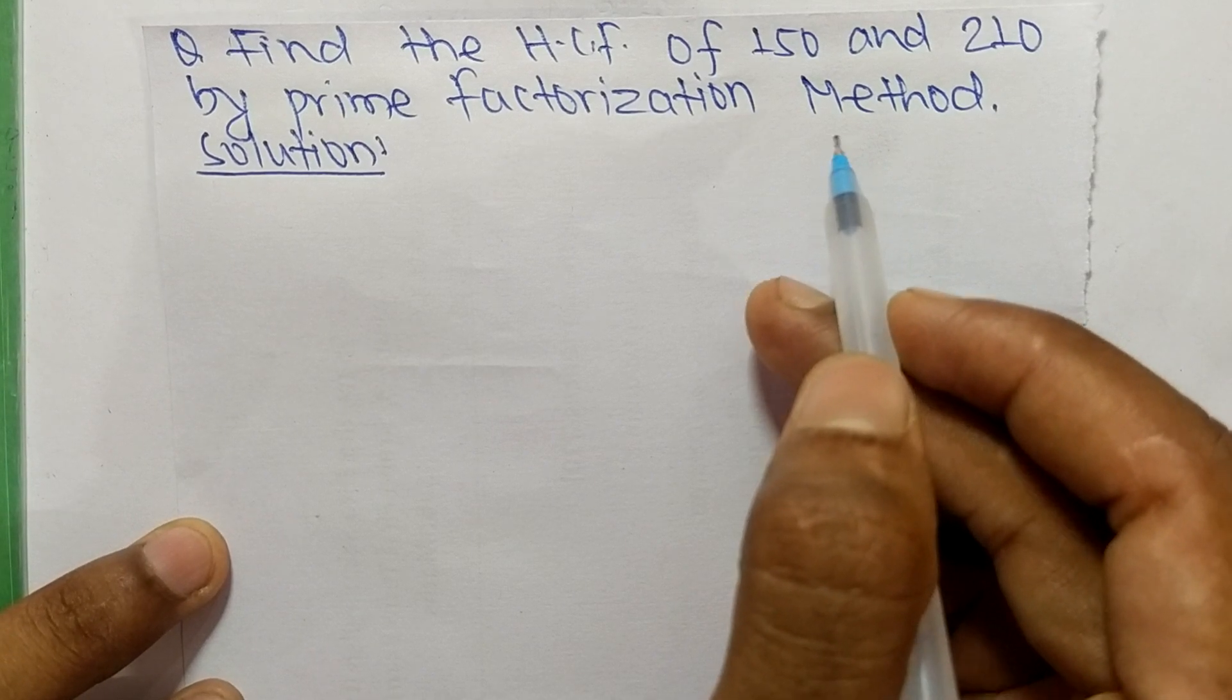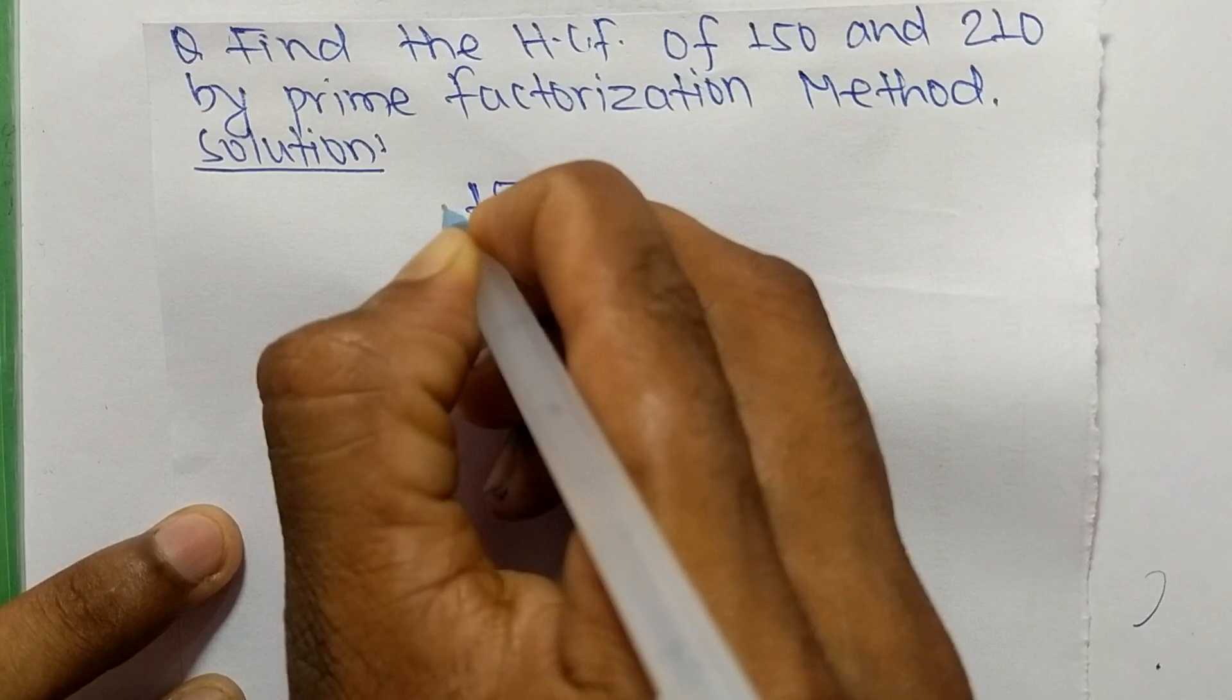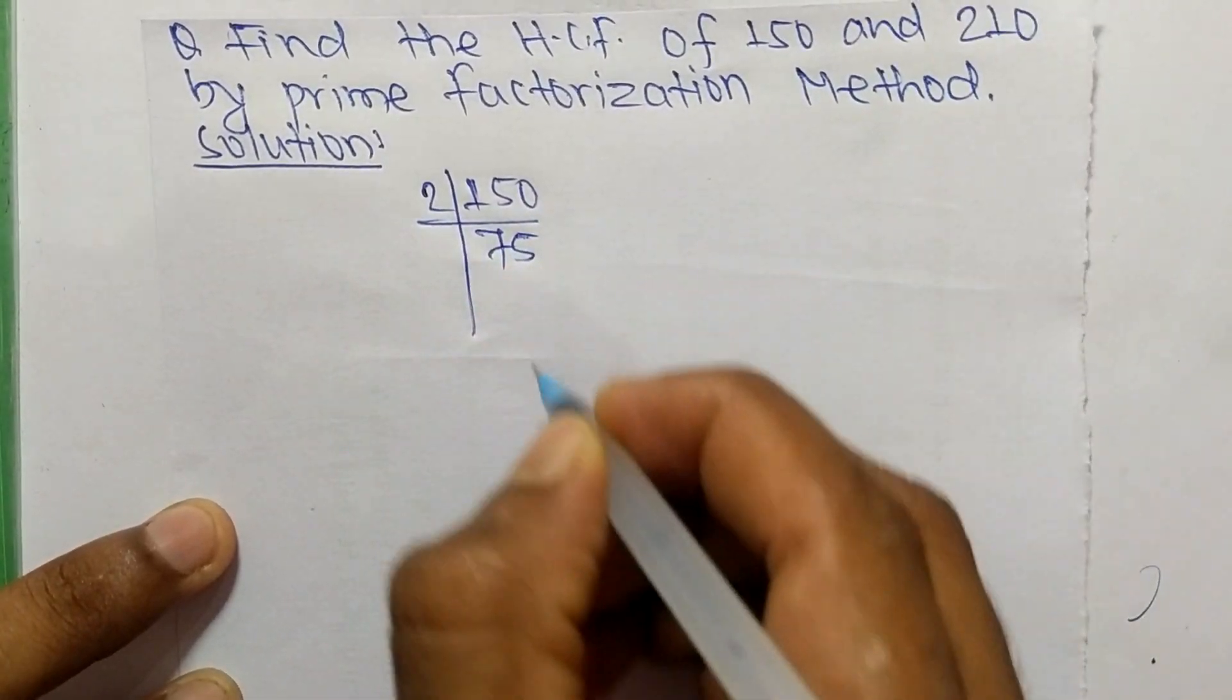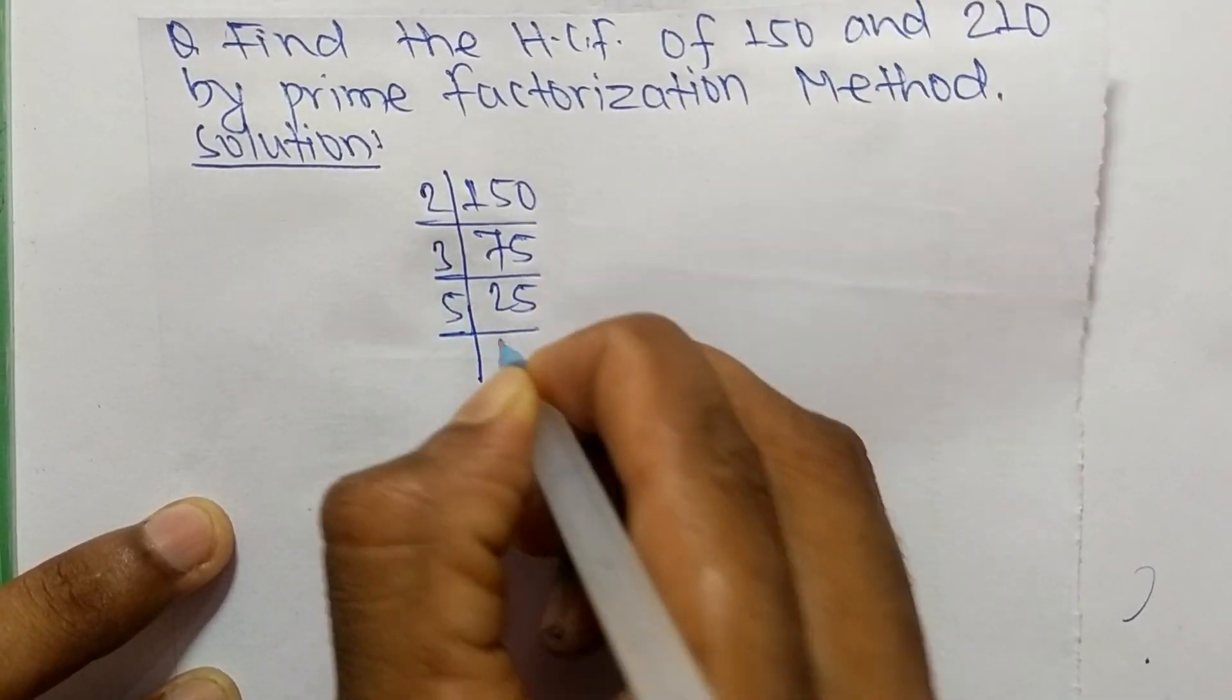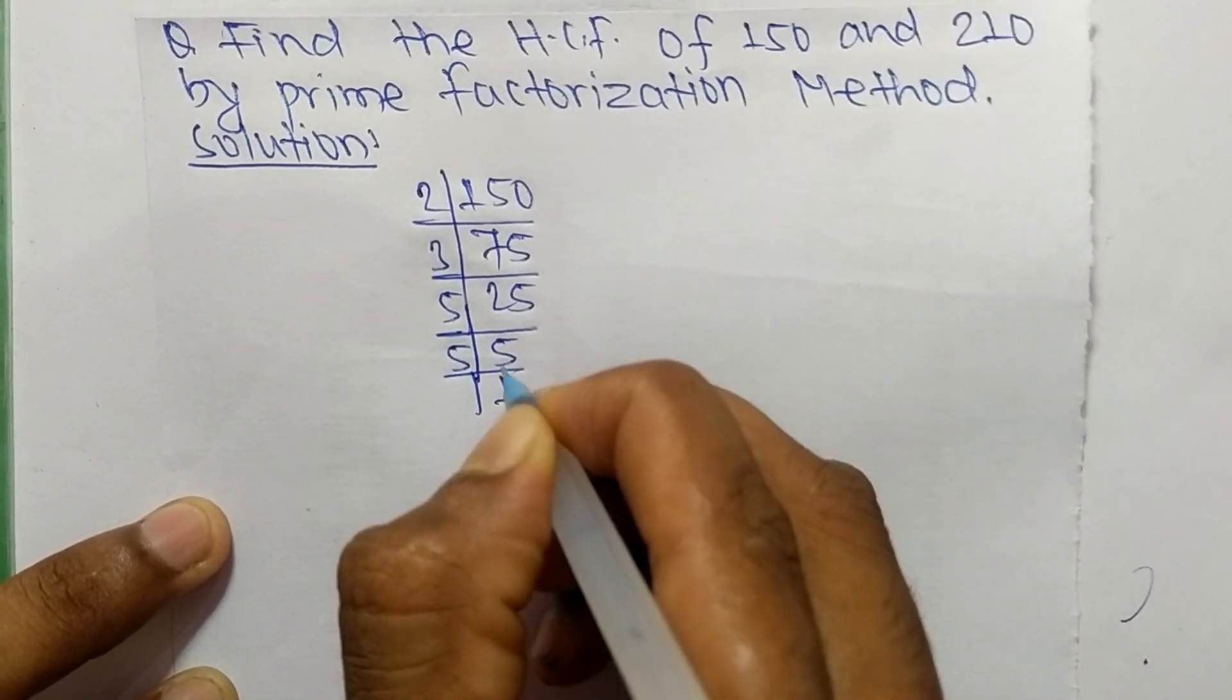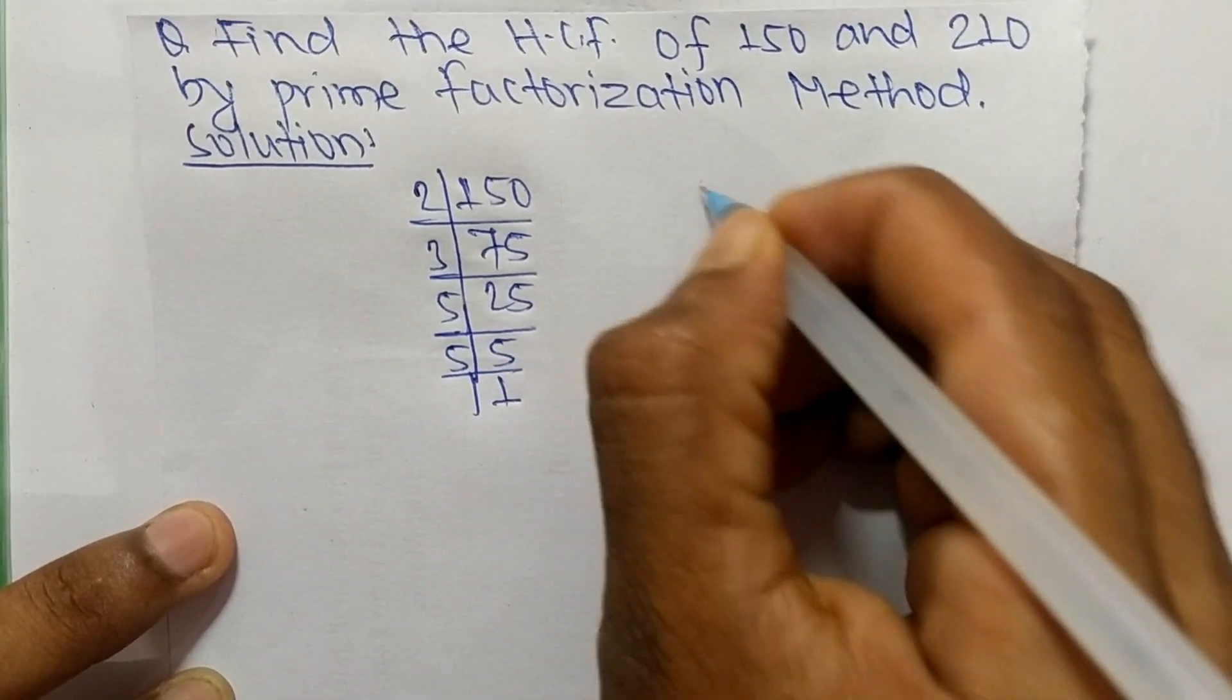First, we find out the prime factors of 150. So it is 2 times 75 equals 150, 3 times 25 equals 75, 5 times 5 equals 25, and 5 times 1 equals 5.